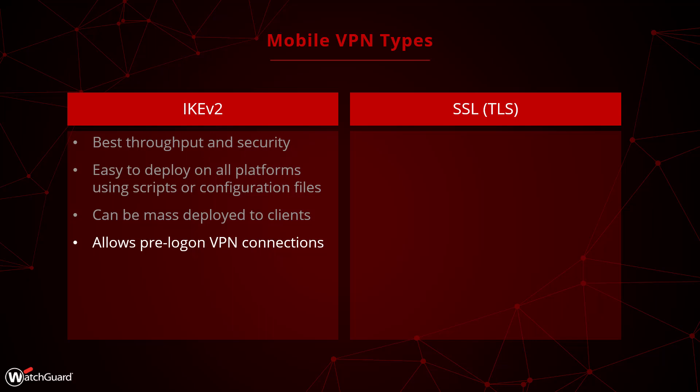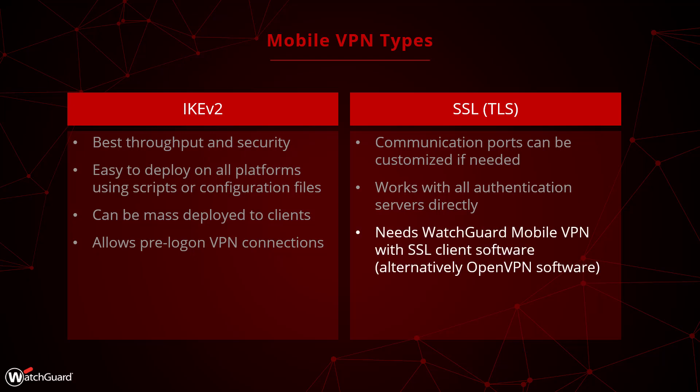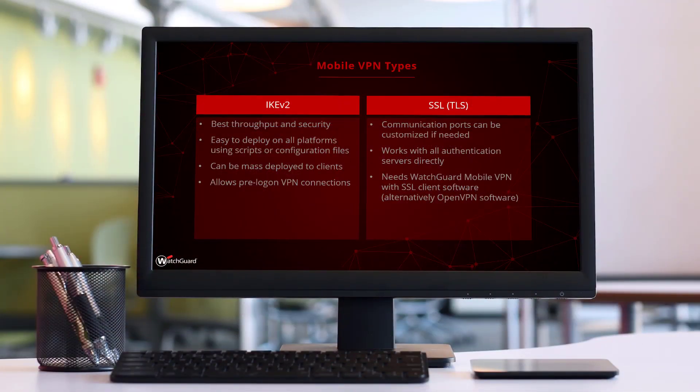Moving to SSL VPN, which actually uses TLS for encryption, you have the option, when necessary, to customize the ports for authentication and communication over the tunnel. This option will allow you to authenticate all authentication servers directly, especially Active Directory, while IKEv2 requires using the Active Directory Network Policy Server role, short NPS, to act as a RADIUS server to facilitate the Active Directory communication. The clients need the WatchGuard branded OpenVPN software to be installed, which is only available for Windows and Mac. With this client, changes to network routes and the SSL VPN configuration on the clients would be updated automatically on their next connections, while using the generic OpenVPN software you would need to import the new profile to update the routing information. This also applies to IKEv2 needing to redeploy the new configuration file.